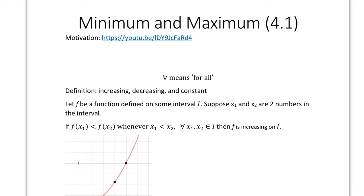We're going to take a look at a few different definitions. It's important in mathematics to give clear, precise definitions, because without them we might not be agreeing on what we're talking about. For example, you know what an increasing or decreasing graph looks like, but how would you define something to be increasing? If you say 'goes up,' which way is up? What do you mean by 'goes'? Those words are vague, and we need to be specific in math.